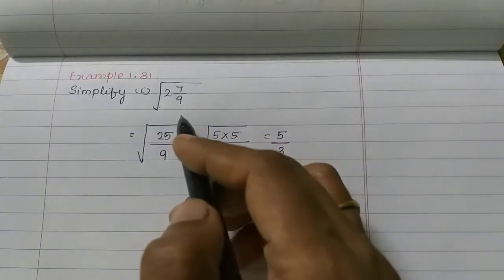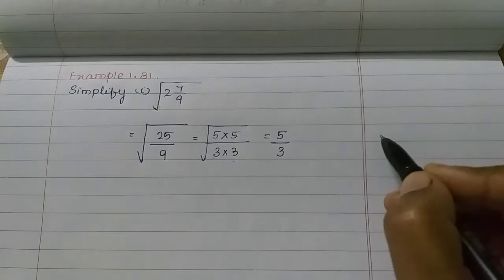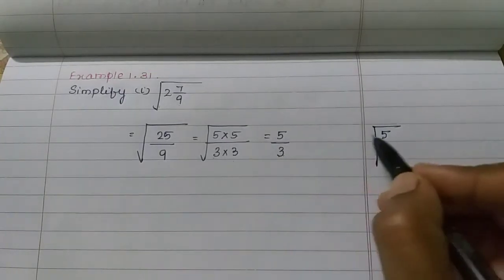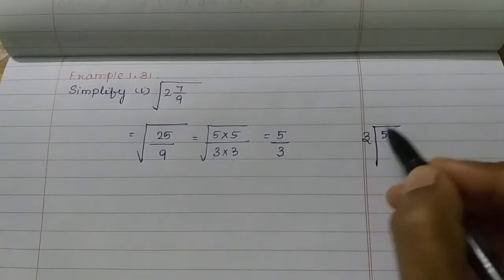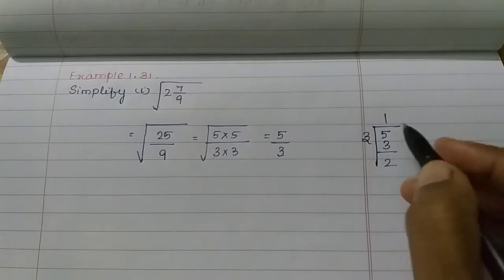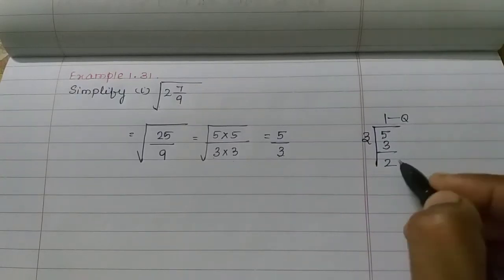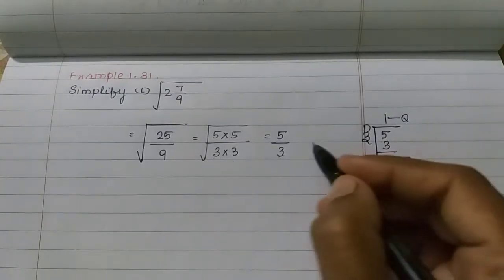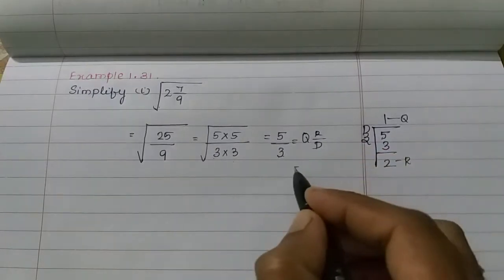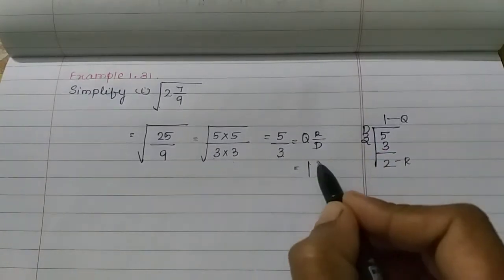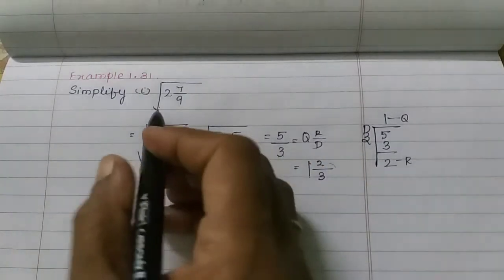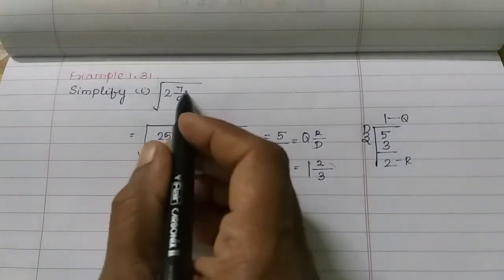Out of the square root comes 5 on top and 3 on the bottom, giving 5 by 3. Since we need a mixed fraction, we divide: 3 ones are 3, balance 2. So the quotient is 1, remainder 2, divisor 3. The answer is 1 and 2/3, which is the value of root of 2 and 7/9.